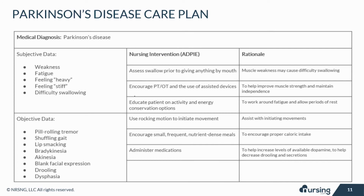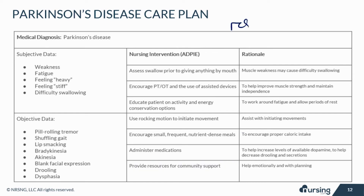Administer medications as ordered by the doctor to help increase dopamine levels in the brain. Carbidopa-levodopa is a very commonly used drug. Anticholinergics can also be used to decrease drooling and secretions. Provide resources for the patient and family for community support, as progressive degenerative diseases can take a significant toll on patients and their families, and community support is very helpful.